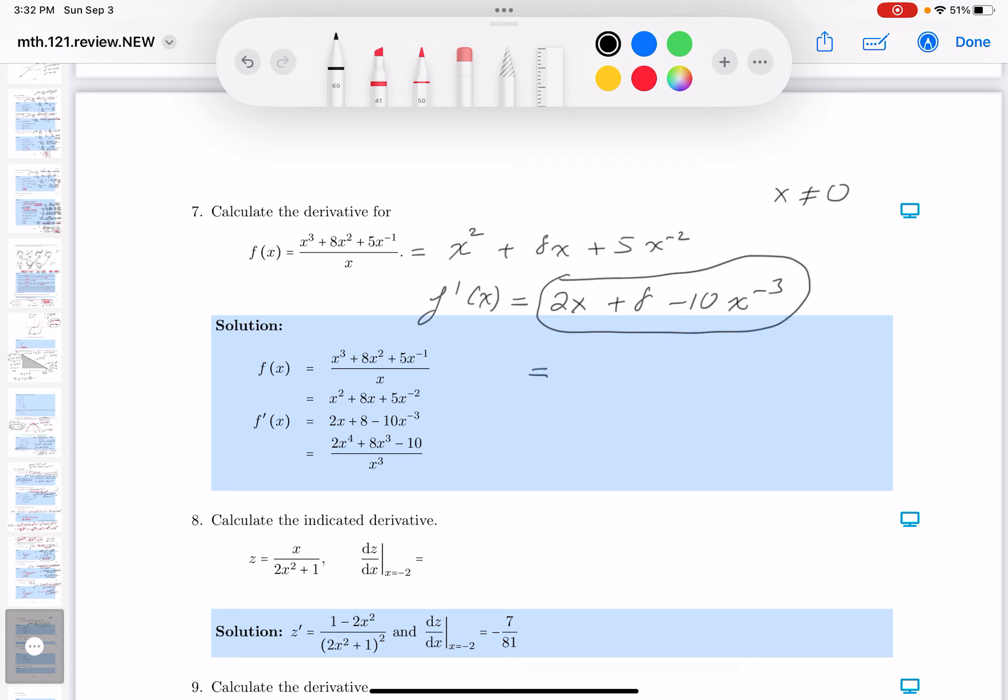Again, I want to simplify it, and let me write it over for you. I don't like the negative exponent. I'm going to get a common denominator.